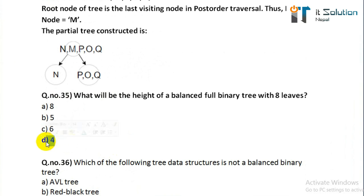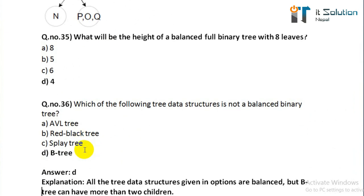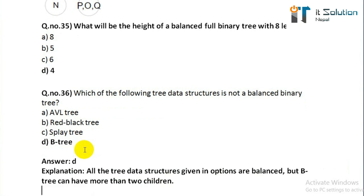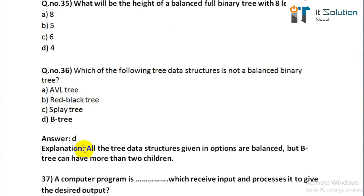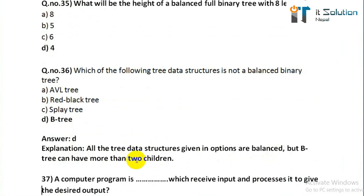Question number thirty-six: which of the following tree data structures is not a balanced tree? Its correct answer is B-tree, option D. Explanation: all the tree data structures given in the options are balanced, but a B-tree can have more than two children.